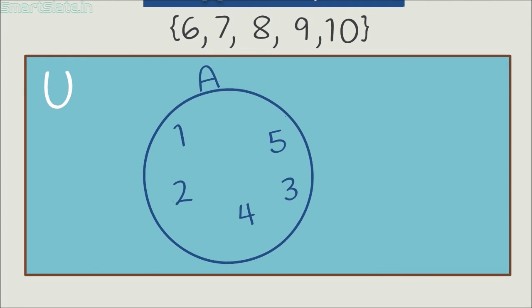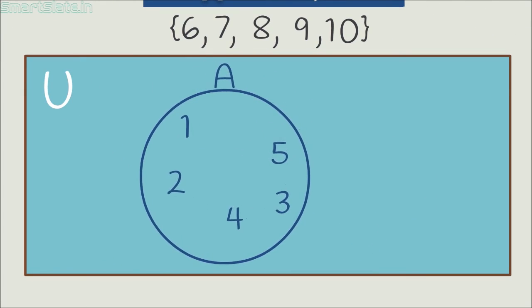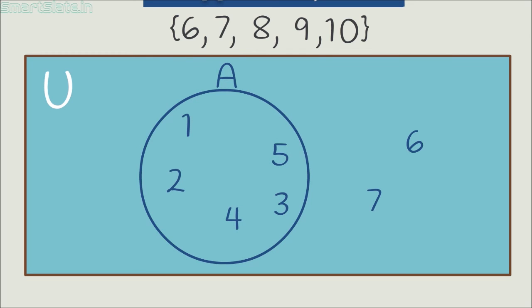In the diagram, the first circle represents set A and the elements outside this circle make the complement of set A.